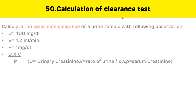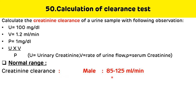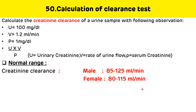Calculation of creatinine clearance. Given: U = 100 mg/dL (urinary creatinine), V = 1.2 mL/min (rate of urine flow), P = 1 mg/dL (serum creatinine). Using the formula: creatinine clearance = (U × V) / P. Normal range of creatinine clearance is 85–125 mL/min in males and 80–115 mL/min in females.